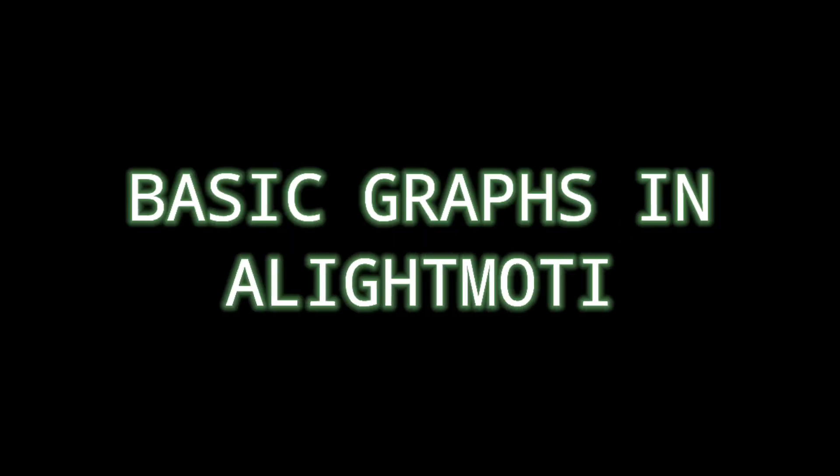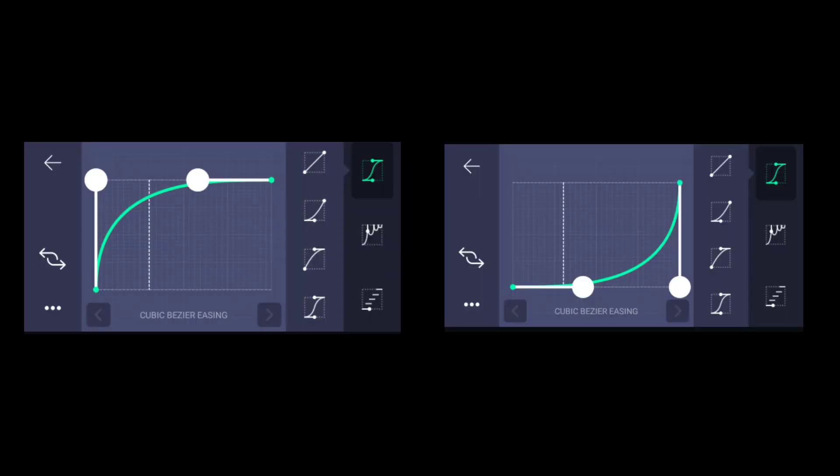Basic graphs in Alight Motion. This is one of the most basic transition graphs on Alight Motion. It's very good for pretty much any transition.